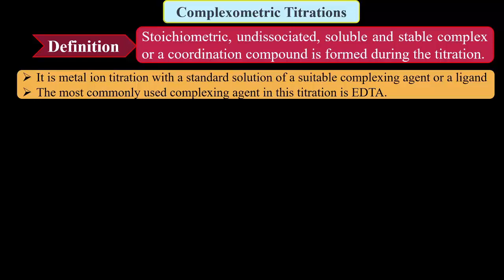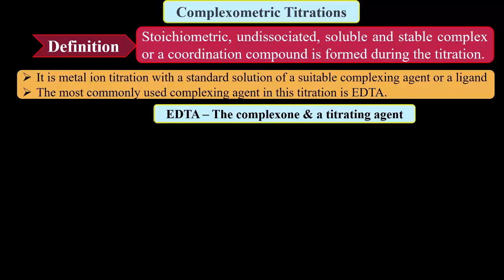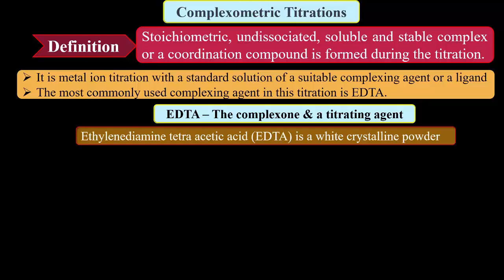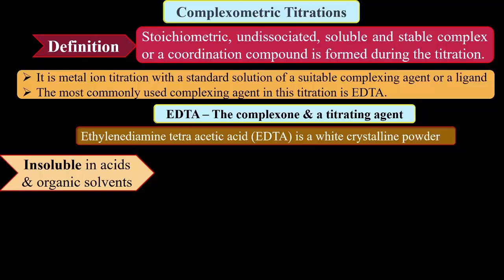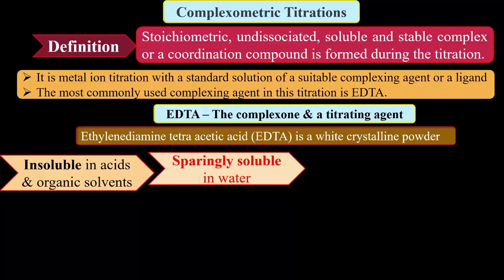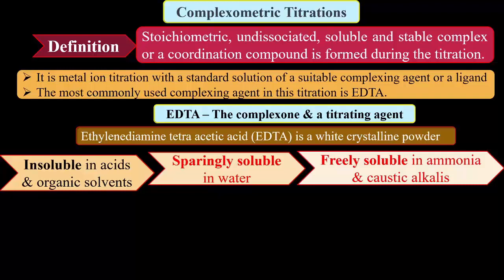In the complexometric titrations, the most commonly used complexing agent is EDTA. So now we have seen the EDTA, the complexing and titrating agent. This EDTA, or the long form of EDTA, is ethylene diamine tetraacetic acid. It is a white crystalline powder and it is soluble in acids and organic solvents, while sparingly or very less soluble in water.